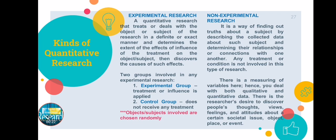Experimental research is a quantitative research that treats or deals with the object or subject of the research in a definite or exact manner. It determines the extent of the effects or influence of the treatment on the object or subject, and also discovers the causes of such effects. In experimental research, there are two groups always involved: the experimental group and the control group. The experimental group receives treatment or influence, while the control group does not receive any treatment.